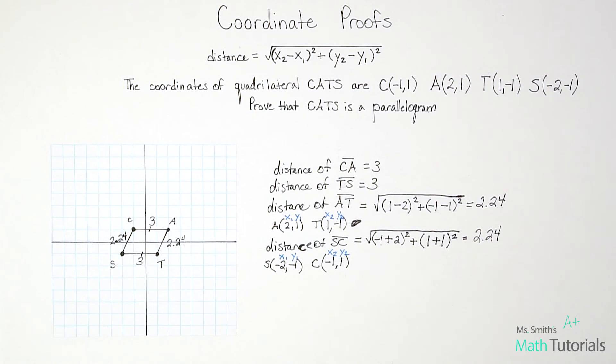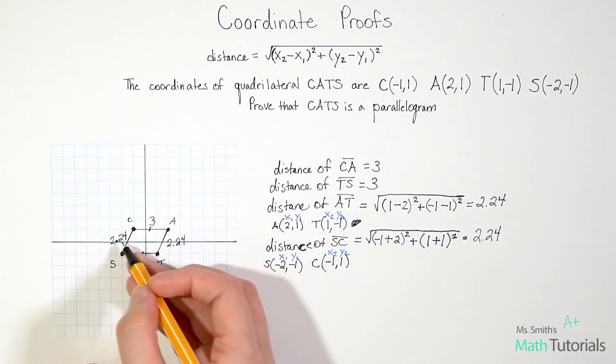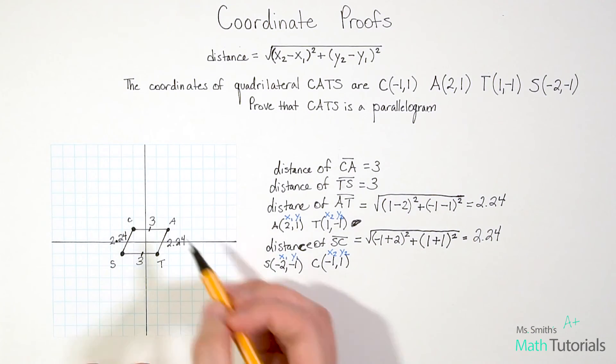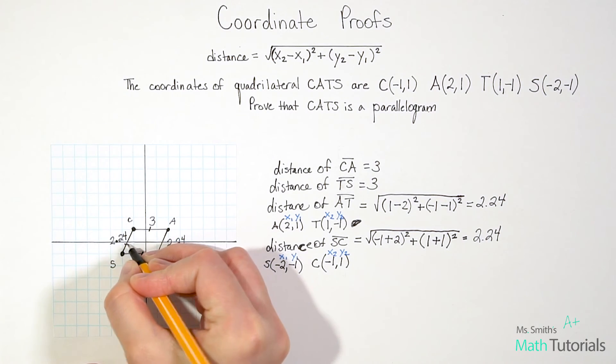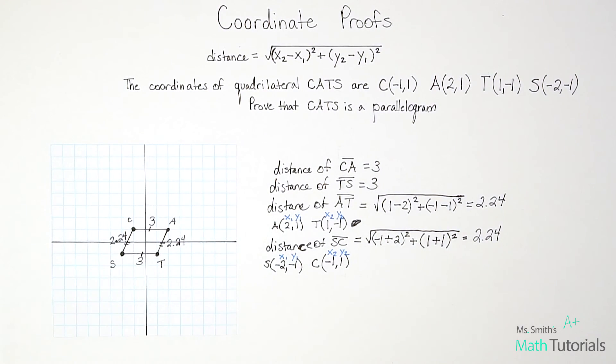Let's think about, we kind of got lost in the distance formula there for a second, but let's really think about what our goal is. We're trying to prove that CATS is a parallelogram. And in order to be a parallelogram, according to our parallelogram properties, we have to have the same distance on the opposite sides. So because we now know this side is congruent to this side, we can now say CATS is truly a parallelogram.